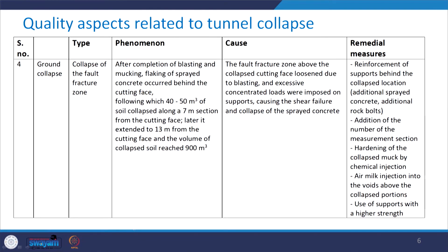The fourth category of ground collapse is the collapse of the fault fracture zone. All these fall under the category of ground collapse but are different components that have to be treated in different manners. The phenomena that took place was that after the completion of blasting and mucking, flaking of the sprayed concrete occurred behind the cutting face, following which 40 to 50 cubic meters of soil collapsed along a 7 meter section. Later it extended to 13 meters from the cutting face and the volume of collapsed soil reached as high as 900 cubic meters.